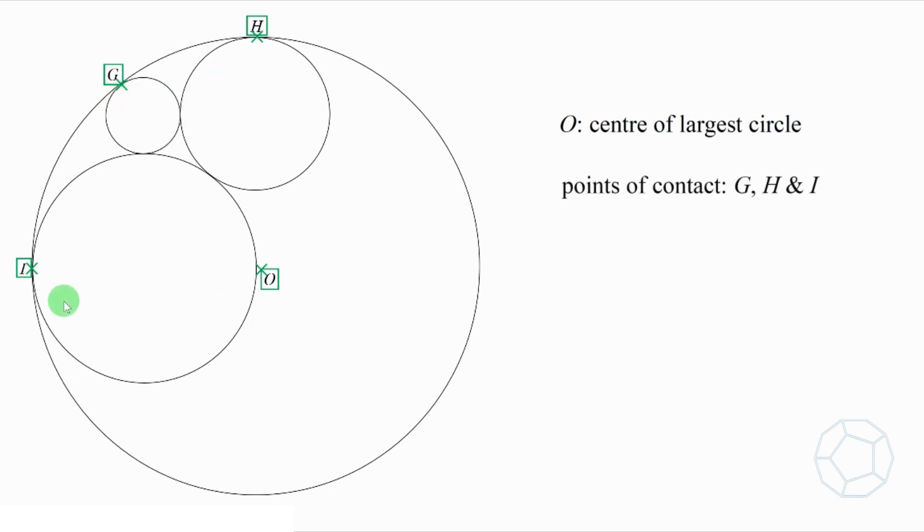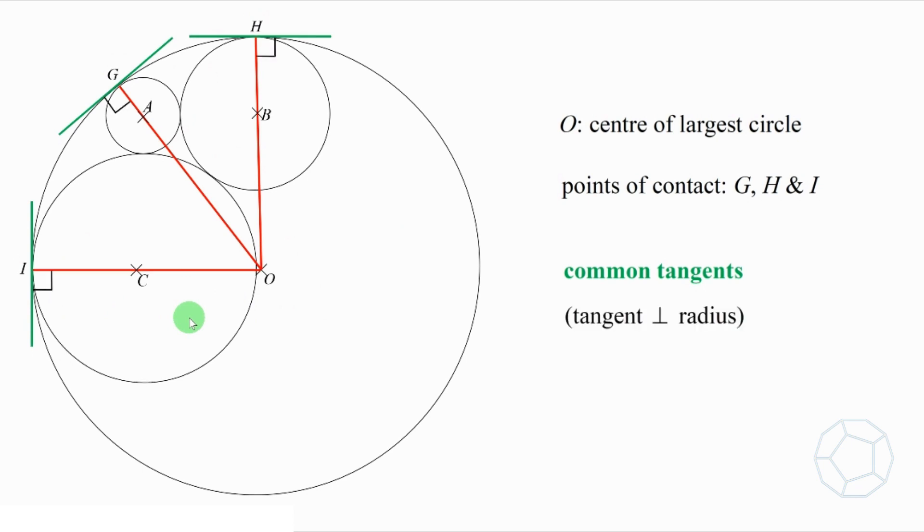As the four circles touch each other, they share the common tangents, which are the green lines in the figure. By tangent perpendicular to radius again, OA, G, OB, H, and OC, I, they are all straight lines.